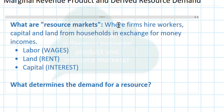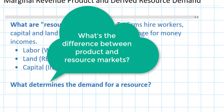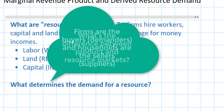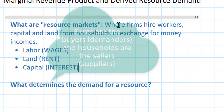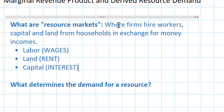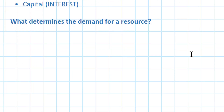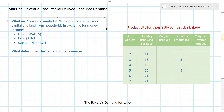What's different between resource markets and product markets is that the roles are reversed. Households are now the suppliers and firms are now the demanders. Firms demand resources in order to produce the goods and services that they then sell to households in the product market.